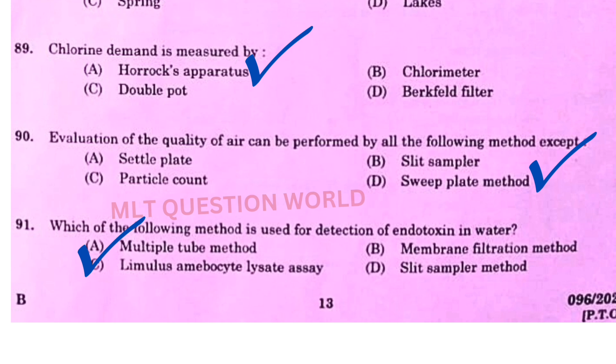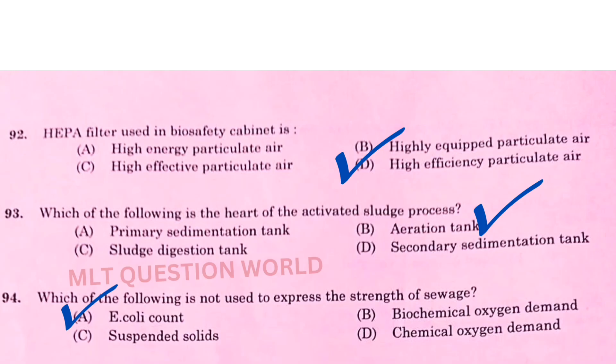Next one: Evaluation of the quality of air can be performed by all the following methods except — the right answer is option D, sweep plate method. Next one: Which of the following method is used for the detection of endotoxin in water? The right answer is option C, Limulus amoebocyte lysate assay. Next one: HEPA filter used in biosafety cabinet is? The right answer is option B, high efficiency particulate air.